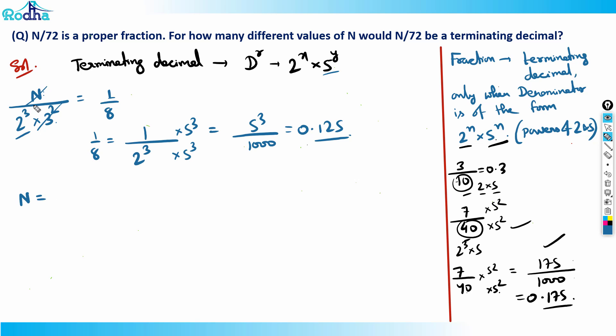You can say that N has to cancel 3², which equals 9. So N can be any multiple of 9. N can be 9, N can be 18, N can be 27, like that.